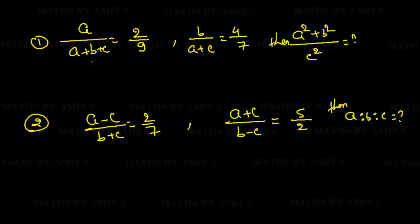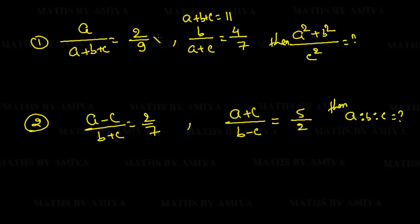Pause the video and solve the two practice questions. In Question 1, A, B, C appear in both ratios. Adding numerator and denominator gives A+B+C = 11 in the first ratio and A+B+C = 9 in the second. We cross multiply: 11 on the second side and 9 on the first side.